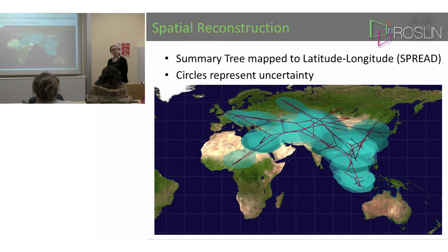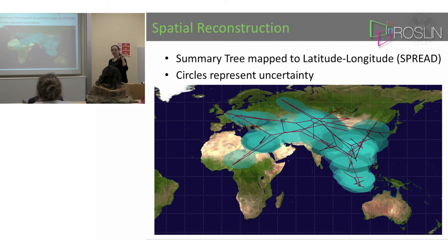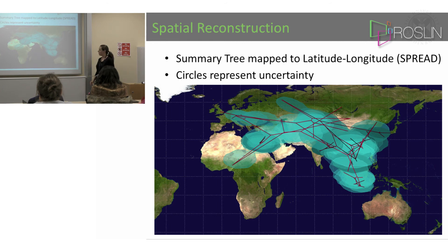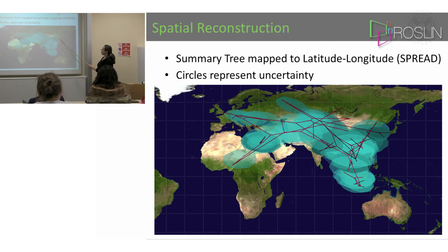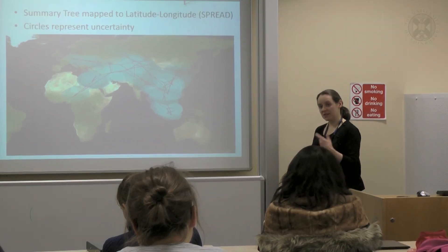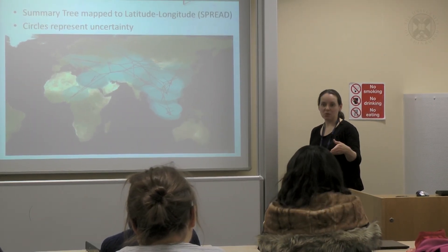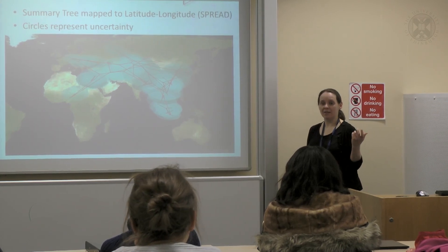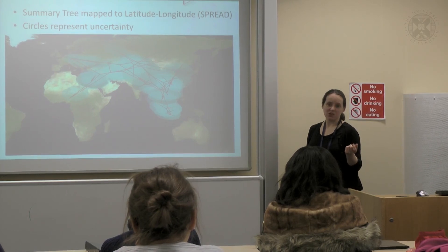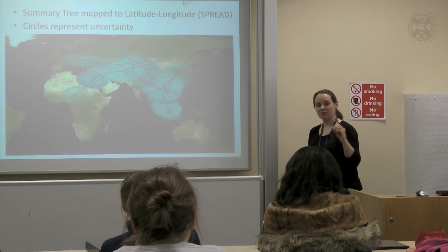BEAST will do that kind of diffusion model as well. The output is a summary tree, but each node of the summary tree is labelled with a latitude and longitude, so you can plot it on a map of the world. These lines are the tree branches spread out over the world, and these are the uncertainty rings showing where the virus could be. So you can see that with this kind of model, you can take your samples and infer back to the start — where did this epidemic start from — particularly in an epidemic situation where you would expect this kind of spatial diffusion out from a point source.